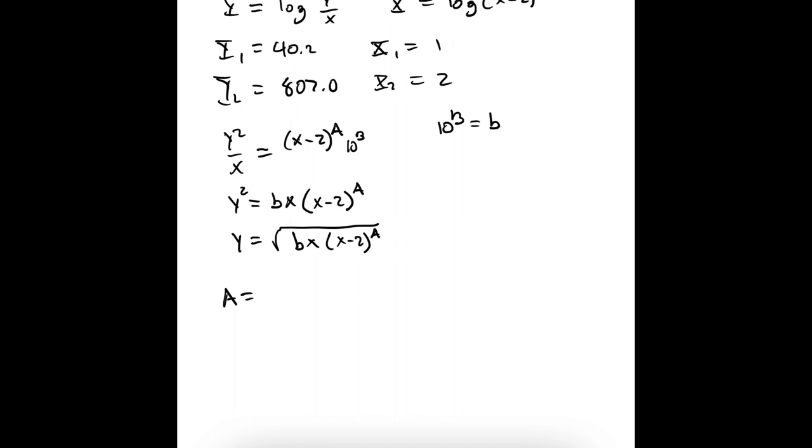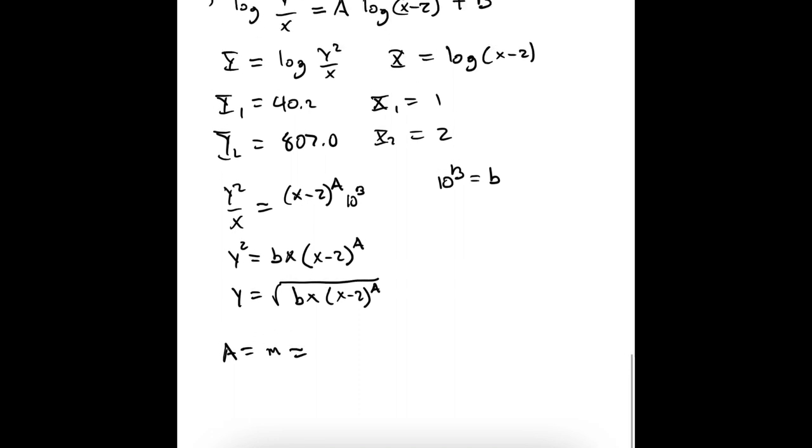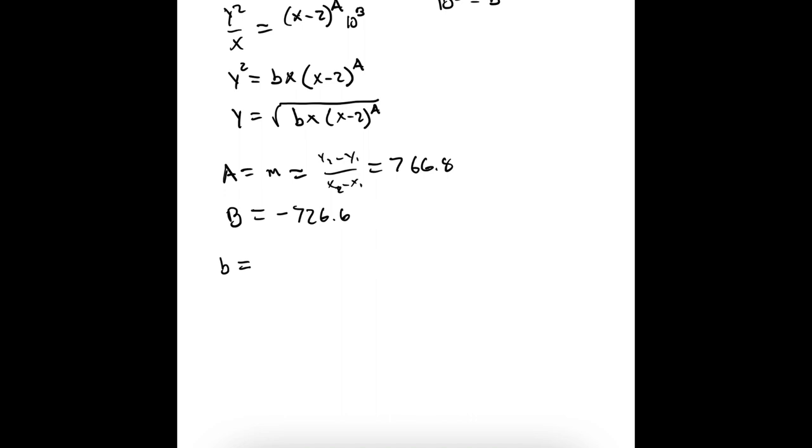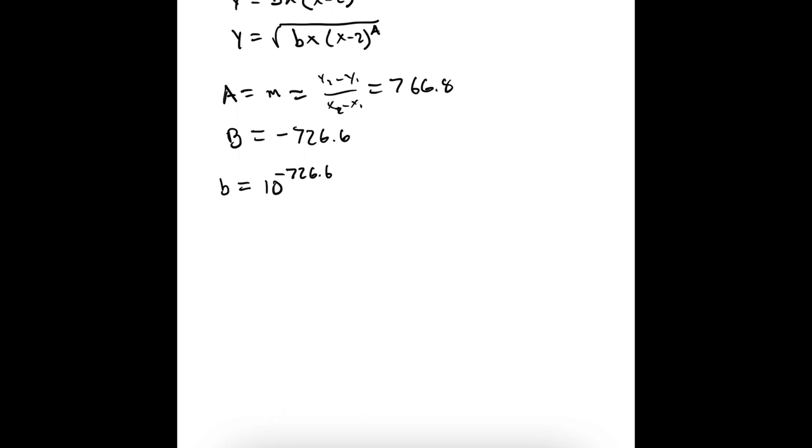So that's our equation for y. a is just the slope, which equals 766.8, and b equals the intercept, which is minus 726.6. We say little b is equal to 10 raised to that power, so very close to 0, just 10 to the minus 726.6, a very small number. And then that's the answer. We have figured out what a is and what b is, so now we have the answer to that equation.